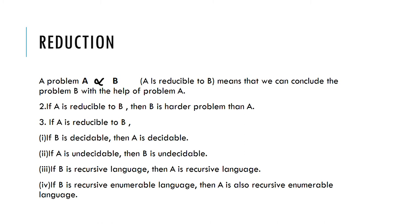If A is reducible to B, the following possibilities arise. First, if B is decidable — if you can build the house, you can also build the kitchen — then A is also decidable. Second, if A is undecidable — if you cannot even make a kitchen — then B is also undecidable. Third, if B is a recursive language, then A is also a recursive language.